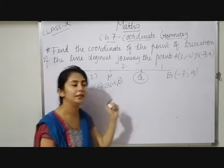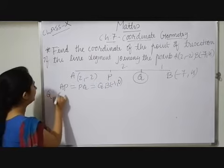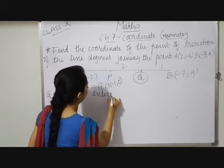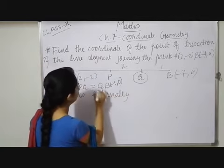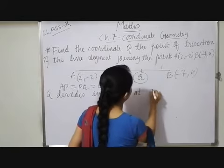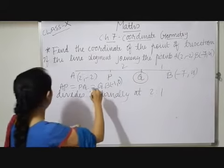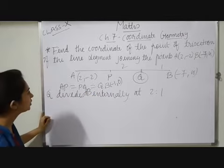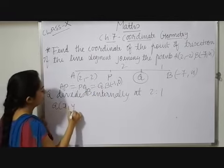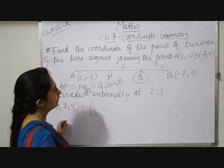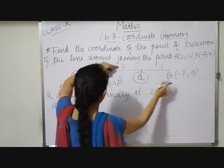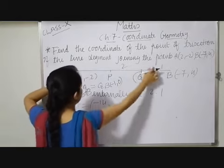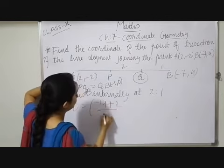But that time in place of A coordinate, you have to take P coordinate. So here Q divides internally at 2:1. P divides AB internally at 2:1. So here Q (x, y) is equals to. Now this one. 2 times 7 is 14 minus, 2 times 1 is 2 upon 2 plus 1, 3.